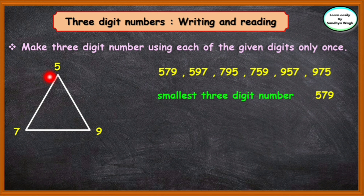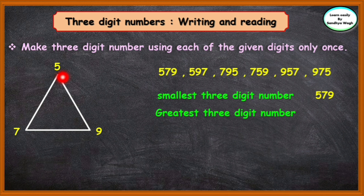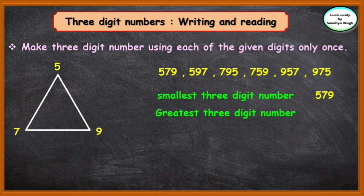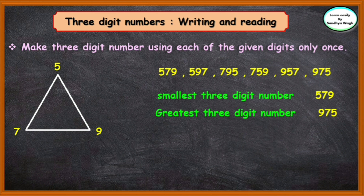We got the smallest three-digit number from these three digits. Now, children, we have to find the greatest three-digit number from these given three digits. To form the greatest three-digit number, arrange the given digits in decreasing order. Here 9 is greater than 7, and 7 is greater than 5. So the greatest three-digit number is 975.